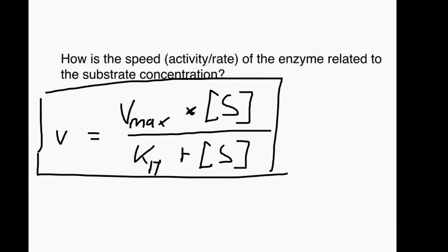Now what do these things actually mean? This V here means the rate, the activity, the rate of the enzyme - the speed at which this enzyme converts the substrate into product.